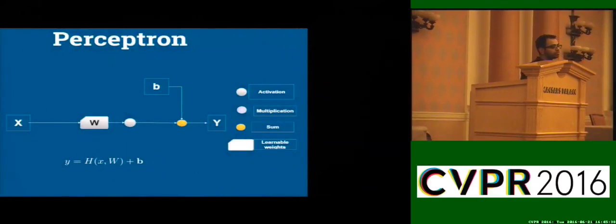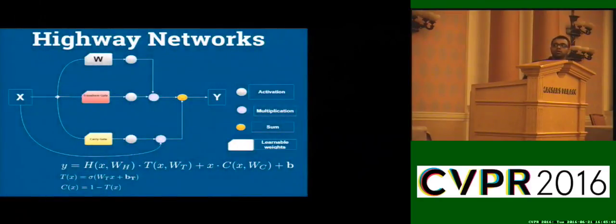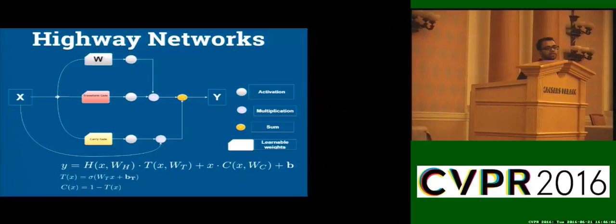This is a very simple perceptron model which is a basic building block of a neural net. The highway network is a small alteration of this block. It's not very different from an LSTM but the goal here is to do a feed-forward network rather than a recurrent one. You can see there are two gates called the transfer gate and carry gate, and they control how much information is to be transferred from one layer to another.